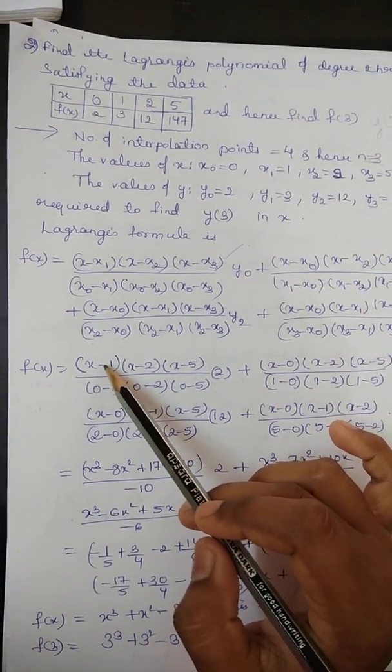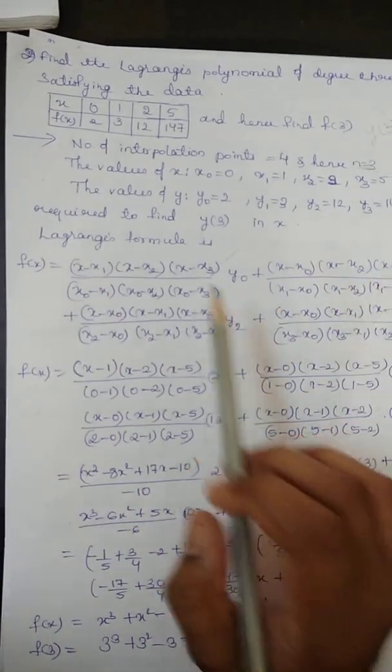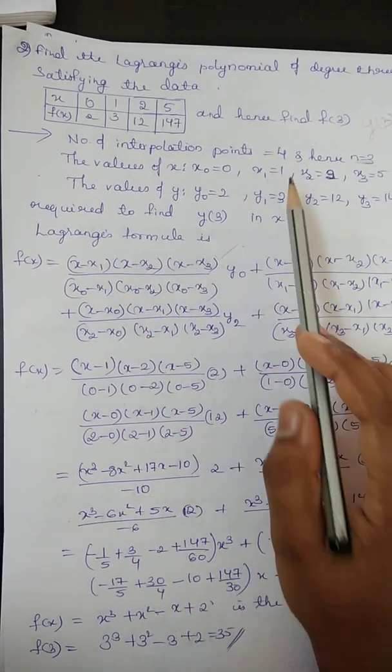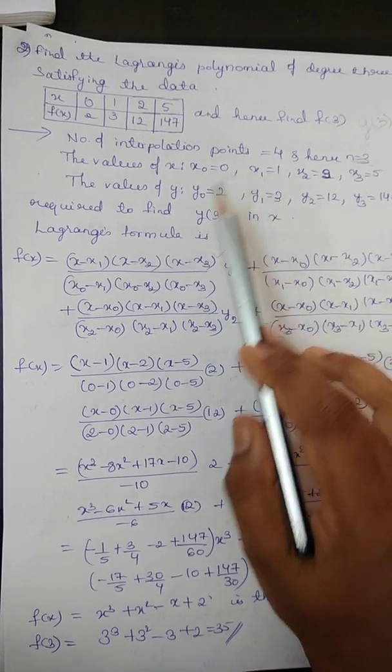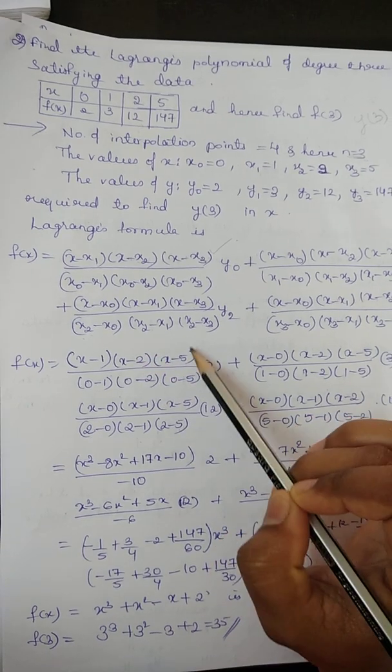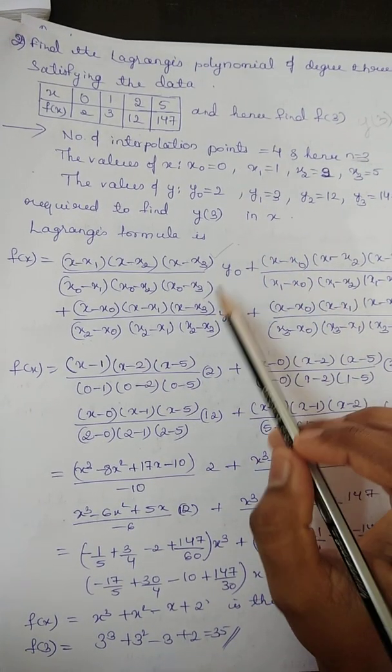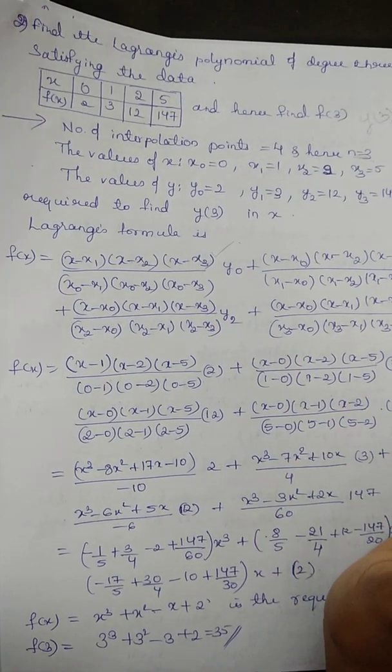See, this is one more way to solve, keeping x as it is. x minus x1 value we have to put. x1 value is 1. Then, x minus x2 value we have to put 2. Then, x minus x3. As in the formula, we have to go on substituting the values.